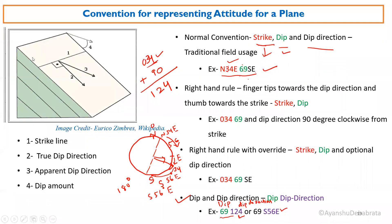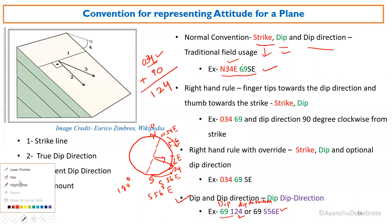We went up to the normal convention and deep direction part. Up to this much we have covered. Now we will be studying the remaining two.